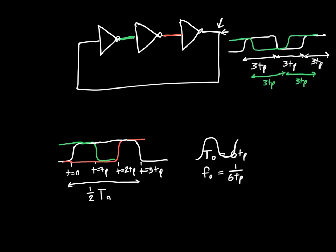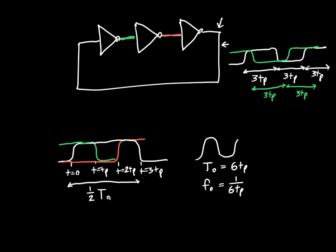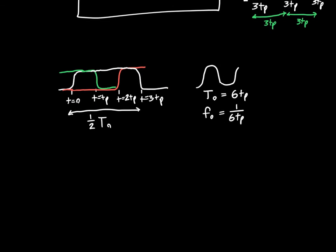Now, if instead of 3 inverters, we wanted to have 5 inverters, we could do that. And we could carry out a similar analysis. And it would show us that the frequency of oscillation now is 1 over 10tp.